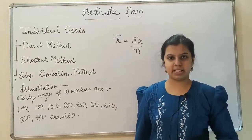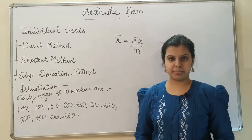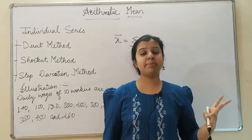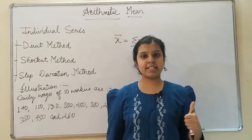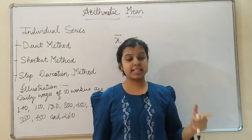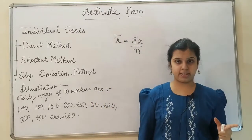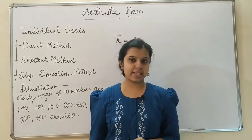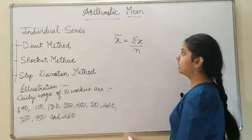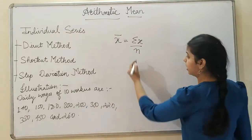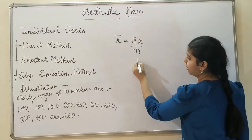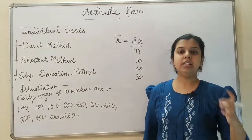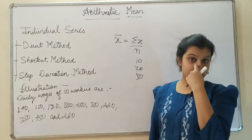As we know, our statistical series has three types: the individual series, the discrete series, and the continuous series. The individual series may not have frequencies — it only contains some observations. For example, 10, 20, 30 — that is an individual series.